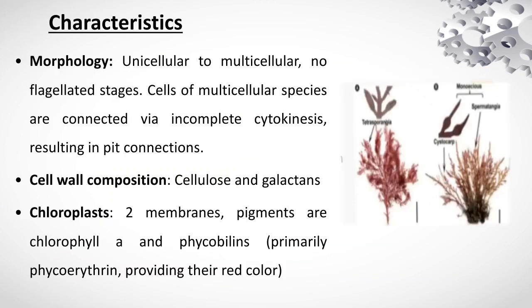Characteristics — number one, morphology: they are unicellular to multicellular, with no flagellated stages. Cells of multicellular species are connected by incomplete cytokinesis, resulting in pit connections. Cell wall composition includes cellulose and other components. Chloroplasts have two membranes; pigments are chlorophyll a and phycobillins.